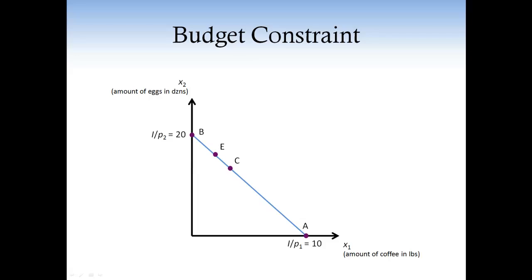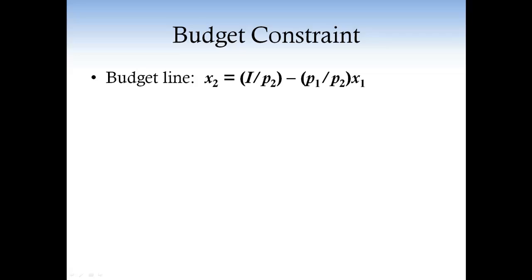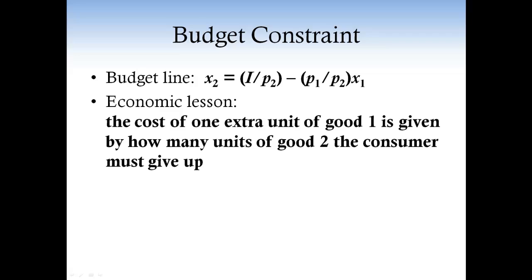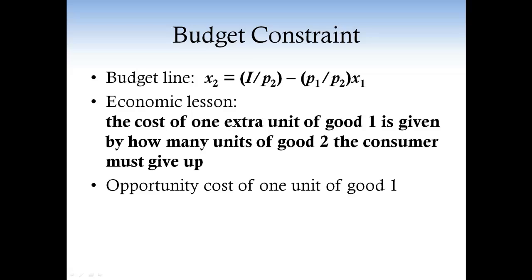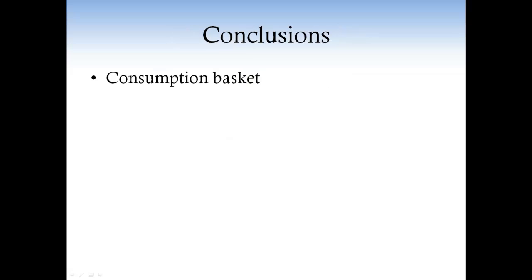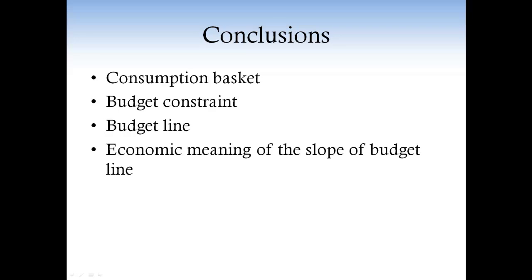All of these are consequences of the fact that the budget line is a linear function with slope negative p1 over p2. The economic lesson is that the cost of one extra unit of good 1 is given by how many units of good 2 the consumer must give up. This is sometimes called the opportunity cost of an extra unit of good 1. In this podcast, we discussed the basic components of a consumer's budget, including the consumption basket, the budget constraint, the budget line, and the economic meaning of the slope of the budget line.